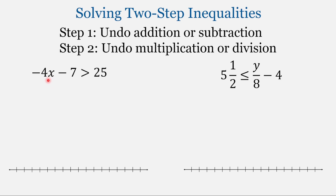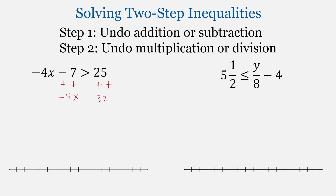For this first problem, the variable x is multiplied by negative 4, and 7 is subtracted from it. Our first step will be to undo this subtraction. To undo subtraction, we use addition, so we're going to add 7. That results in negative 4x on the left side. But what we do to one side, we have to do to the other, so we're going to add 7 to the right side as well. That gives us 32. And then we bring down that inequality sign.